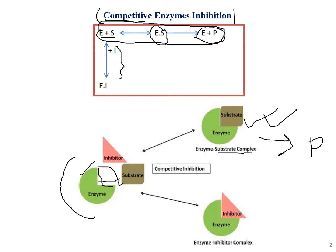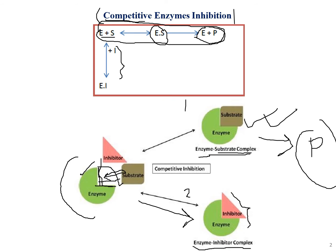The enzyme has its active site open for the substrate to bind. At this point, two things might happen: either the substrate gets to the active site of the enzyme and forms an enzyme-substrate complex, which later forms the product — or the inhibitor occupies the active site instead, forming an enzyme-inhibitor complex, which hinders the formation of product.